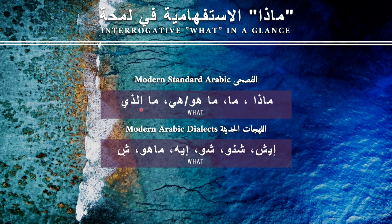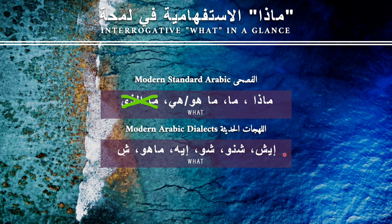'Ma ladhi' is used only when the sentence or question after it contains a verb, so in this scenario we will not use it. In modern Arabic dialects, any of the standard forms is replaced with one of these: 'ash,' 'shino,' 'shu,' 'eh,' 'ma hu,' or just 'sh' as an abbreviation. It's important to know that any one of these in any dialect can replace all the standard forms. Today I'm going to use 'ash,' which is from my dialect — the standard Saudi Arabian dialect.